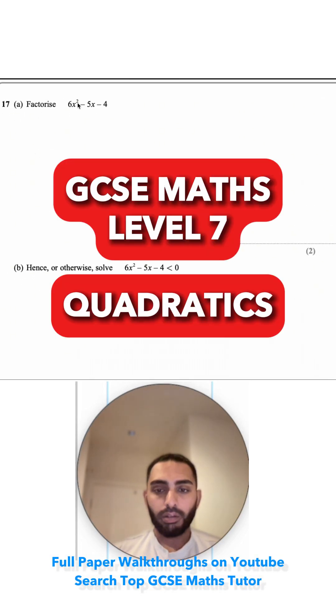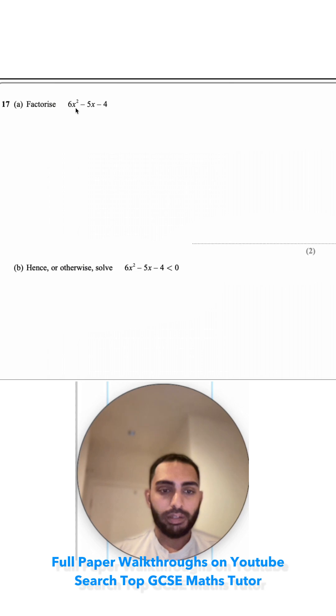Question 17. Factorize 6x squared minus 5x minus 4. First thing I'm going to do here, I'm going to multiply my a and my c, so I'm doing 6 times my negative 4, which is negative 24.